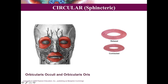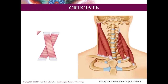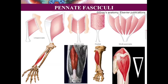Cruciate fasciculus means crossed fibers — the sternocleidomastoid is an example, where clavicular fibers cross behind. Pennate fasciculi are named after a feather ('pinna'). In unipennate fasciculus the tendon is on one side and fascicles come from one side. In bipennate fasciculus the tendon is in the center with fascicles from both sides. In radial or circumpennate fasciculus, fascicles come from all sides. In multipennate fasciculus there are many feather-like features with multiple tendons.